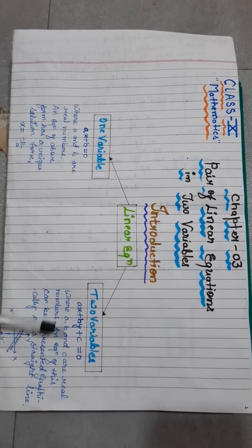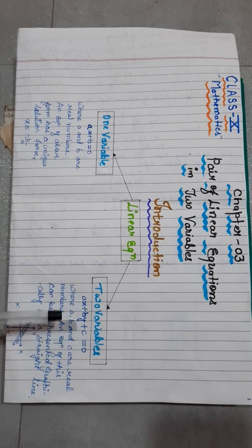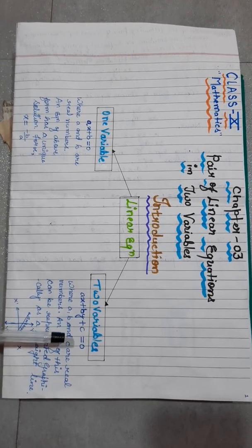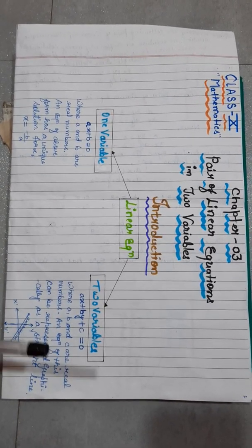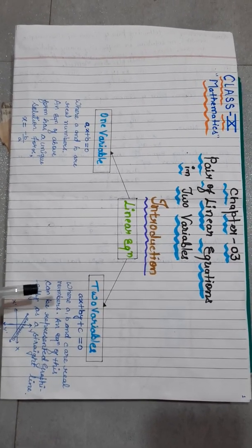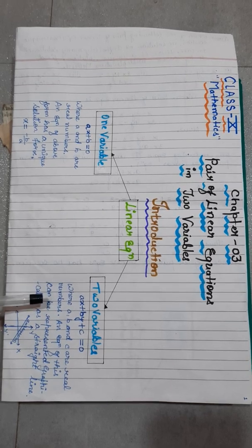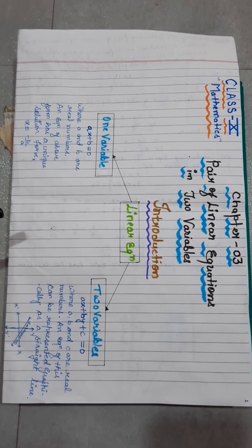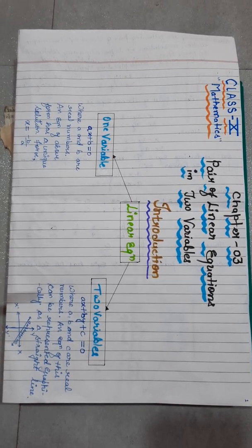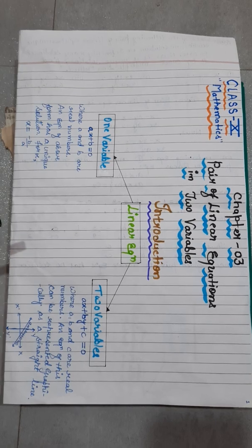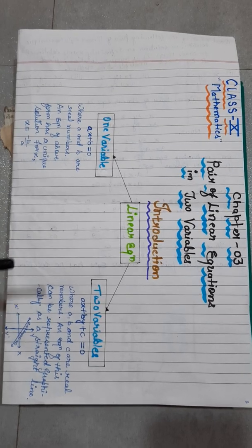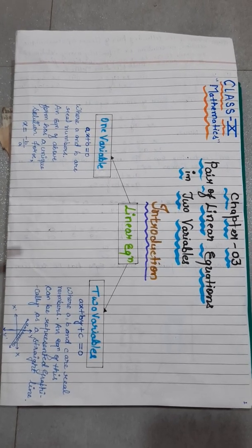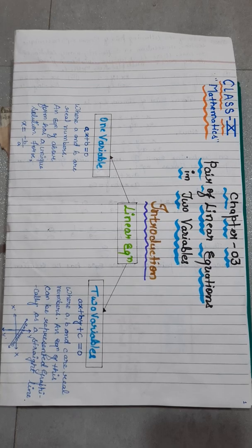In two variables, ax plus by plus c is equal to 0, where a, b, and c are real numbers. An equation of this type can be represented graphically as a straight line.